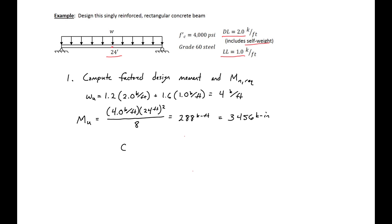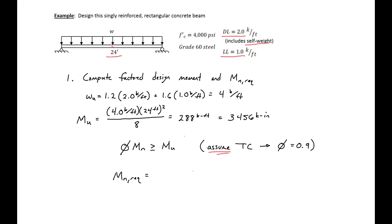We know for our design that we want phi·MN ≥ MU. We will assume that we're going to be tension controlled, so our phi is going to be equal to 0.9. So we can find that we need an MN required equal to MU divided by phi: 3,456 kip-inches divided by 0.9 gives us an MN required of 3,840 kip-inches. This is the value we'll use in our design moving forward.